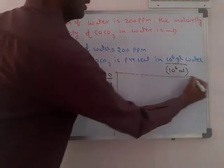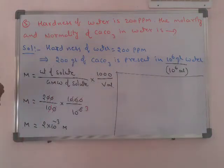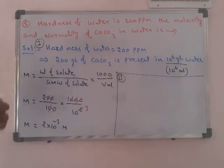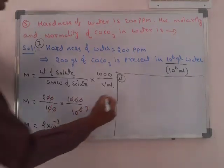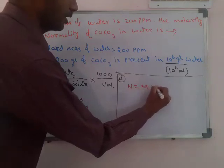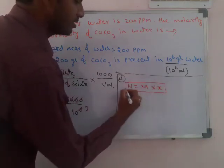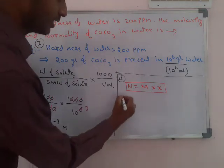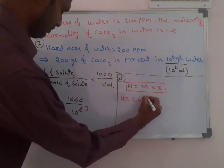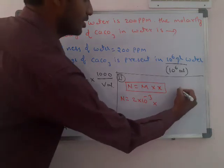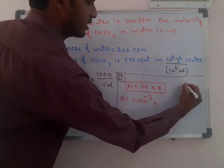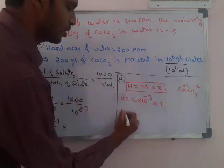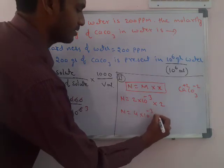Now calculate the normality. We use the relation: Normality = Molarity × n-factor. The n-factor for a salt is the charge on the cation. CaCO₃ is a salt; calcium has a charge of +2, and carbonate is CO₃²⁻, so the charge unit equals 2. Therefore, Normality = 2 × 10⁻³ × 2 = 4 × 10⁻³ N.